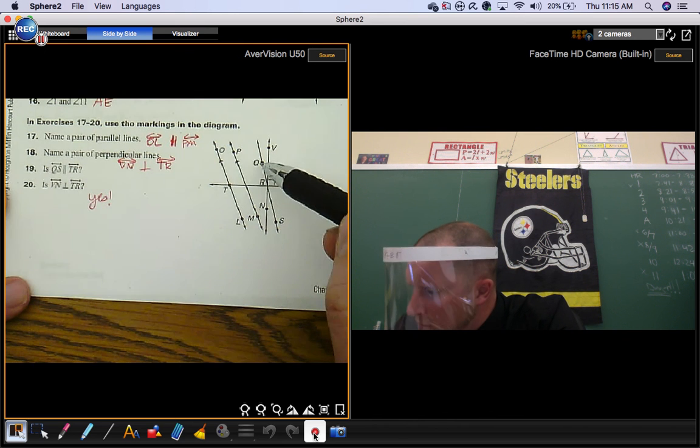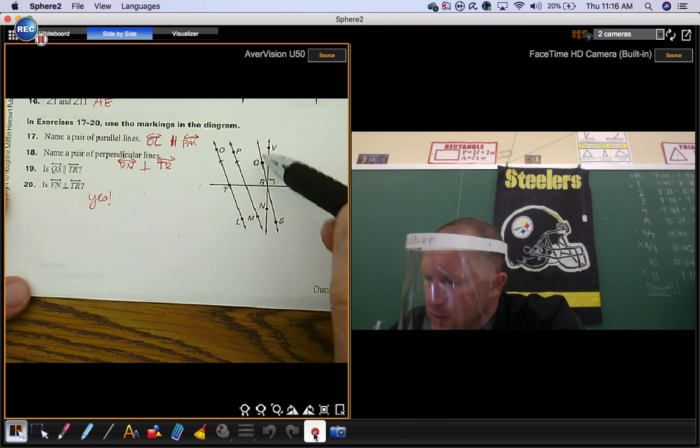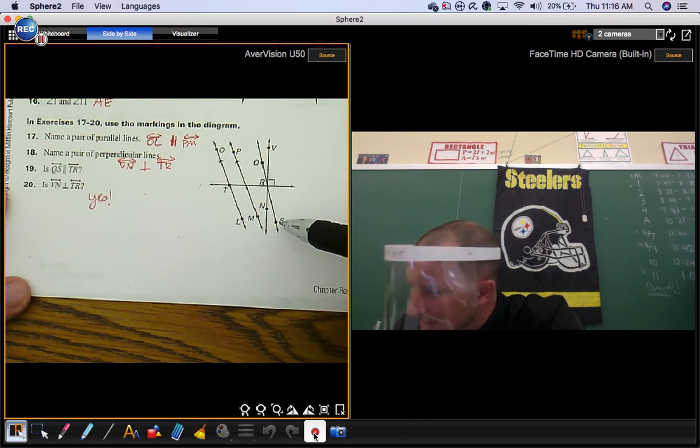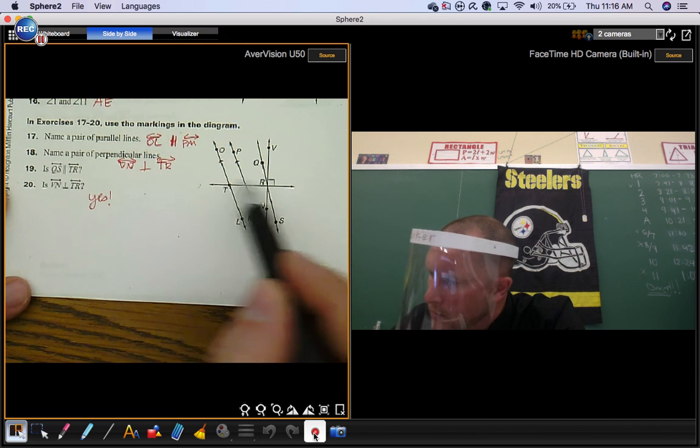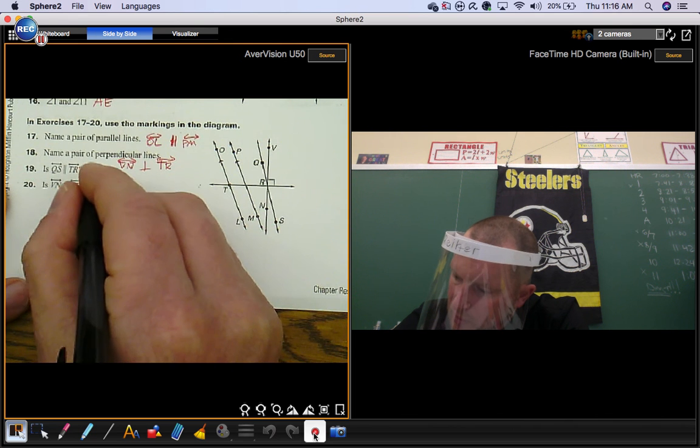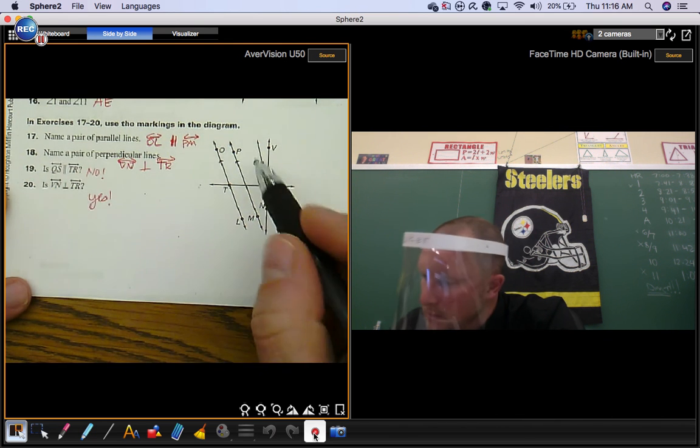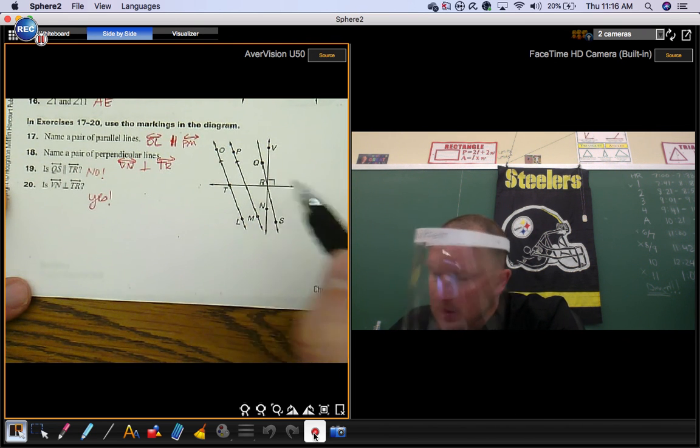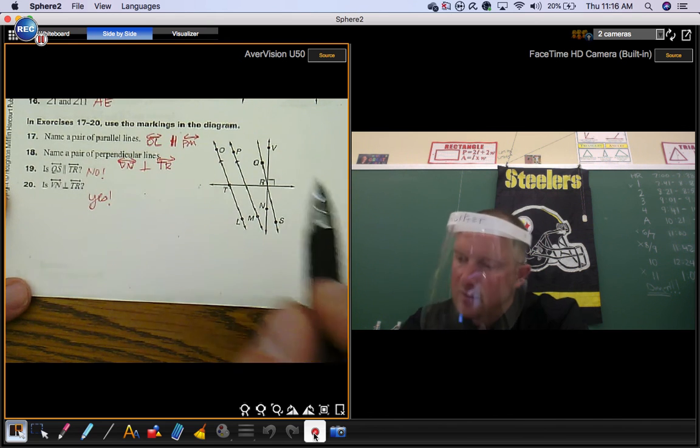Number 19 is line QS, that's this diagonal looking one, parallel to line TR. Line TR is this one. They're definitely not parallel because they touch each other. Line QS line TR intersected point R. So definitely not.